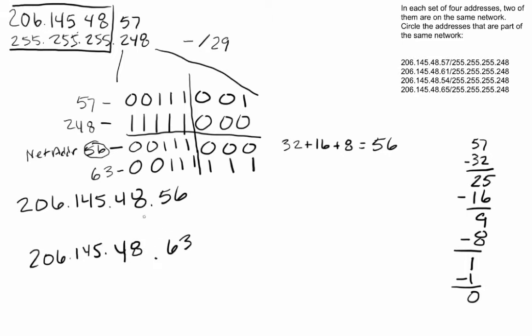And our usable range will be everything in between, which would be the address right after network, .57, through .62, the address right before 63. So let's go back over here. Let's see who's in our network. Well, guess what? 57 and 54 are actually not in the same like I had originally assumed. The number 56 is the start of that subnet, and the last address is 63.